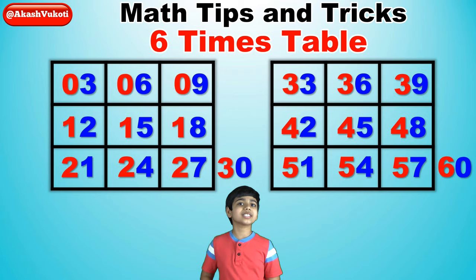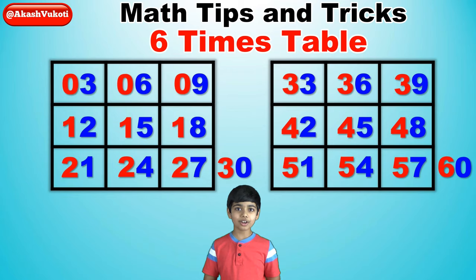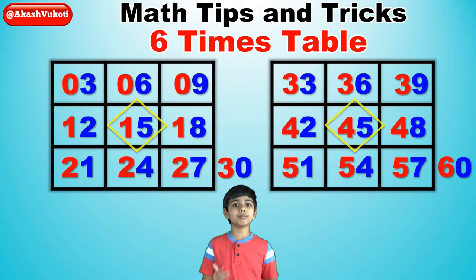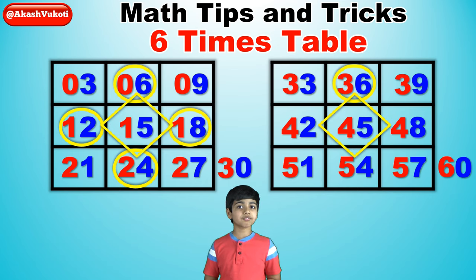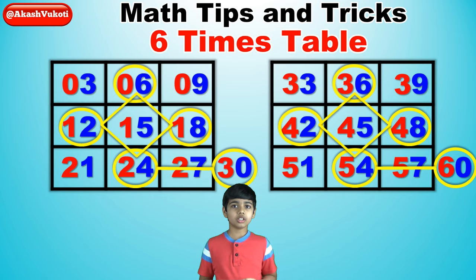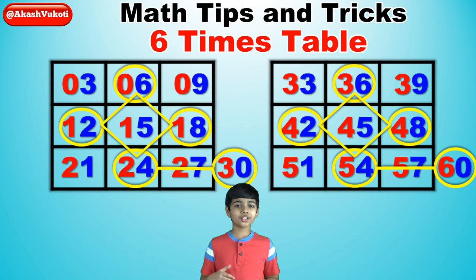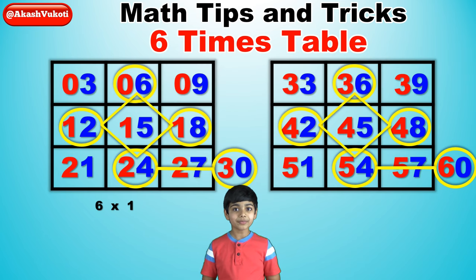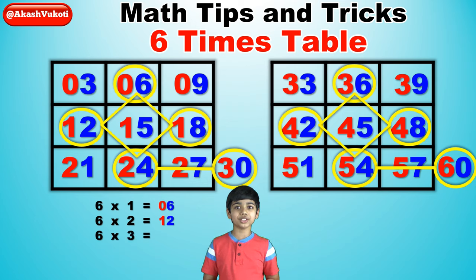It sounds like a lengthy process, but you may notice that this is actually the three times table from three times one to three times twenty. So if you know that, you kind of already know the six times table using this trick. Now all you have to do is make a diamond shape in both grids, connect the first diamond to the thirty and the second diamond to the sixty, and circle all the numbers the diamond shape touches.